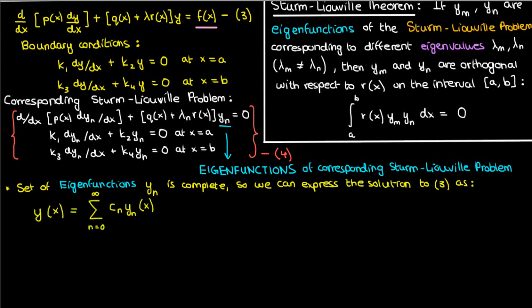What we're going to do next is plug in this y into our non-homogeneous ODE in equation 3, and then solve for these unknown constants c sub n.